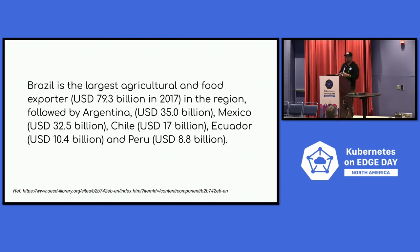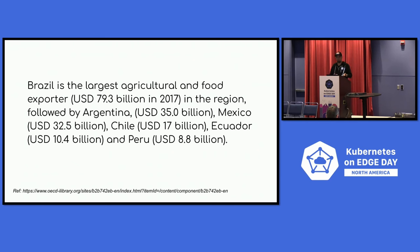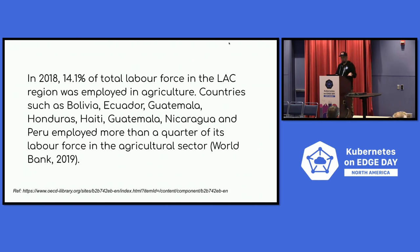Here are some numbers for Latin America. Brazil has the largest agriculture and food export, representing billions of dollars, followed by Argentina. Mexico, Chile, Ecuador, and Peru are also present. These stats are from around 2022 and are pretty recent. That's a lot of money that countries in Latin America are generating when processing plants, food, and animals. There are big numbers, so we have a big market to implement smart things there. In 2018, around 14% of the labor in Latin America was in agriculture — in Bolivia, Ecuador, Guatemala, Honduras — representing a lot of money for our countries.